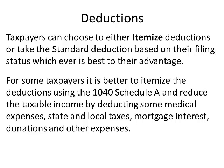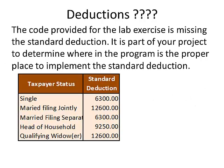Some taxpayers benefit from itemizing deductions, reducing taxable income by deducting medical expenses, state and local taxes, mortgage interest, donations, and other expenses. The code provided in this lab is missing the standard deduction. It is part of your project to determine where to implement the standard deduction and look it up using an array — you must use an array.